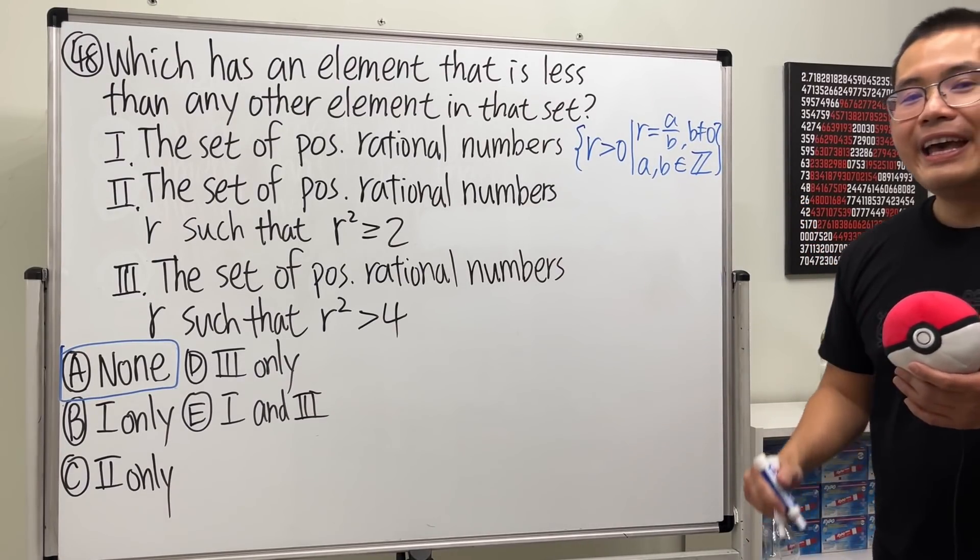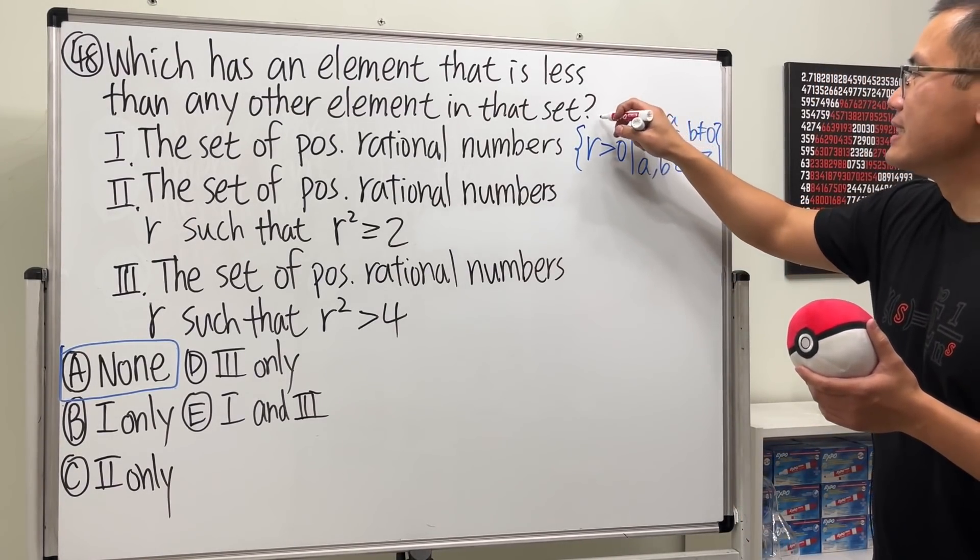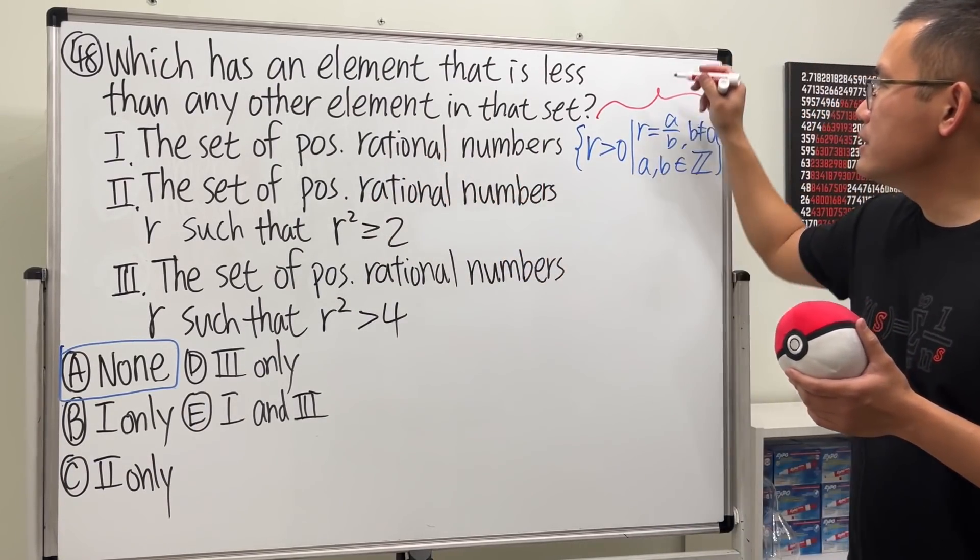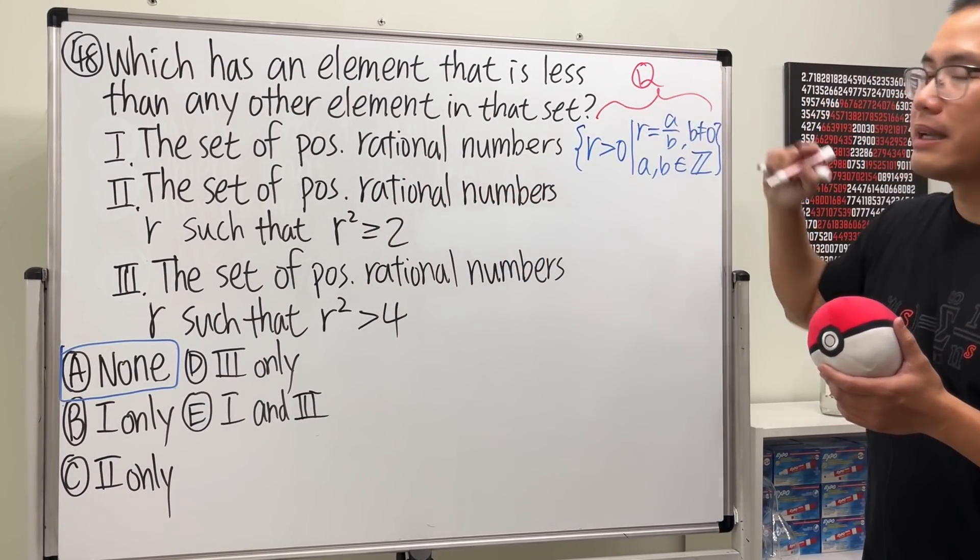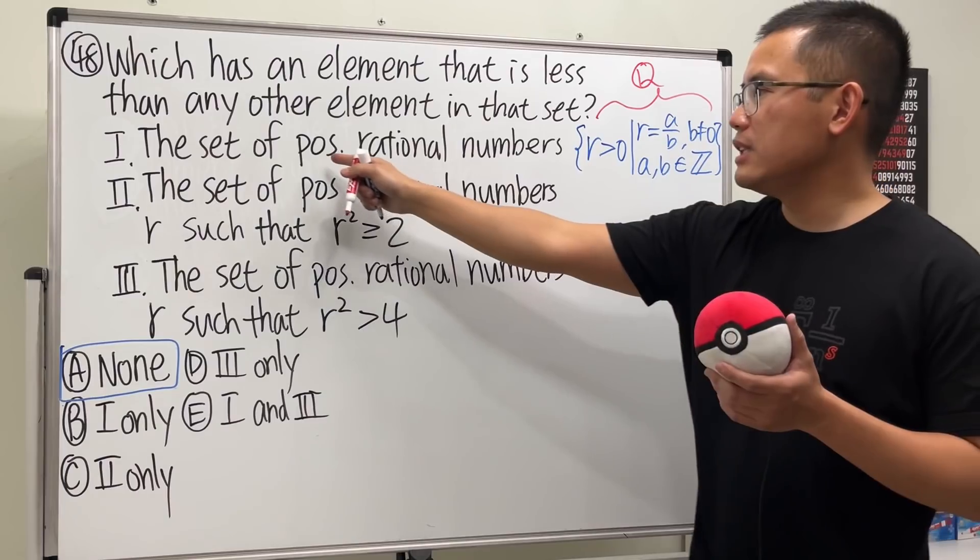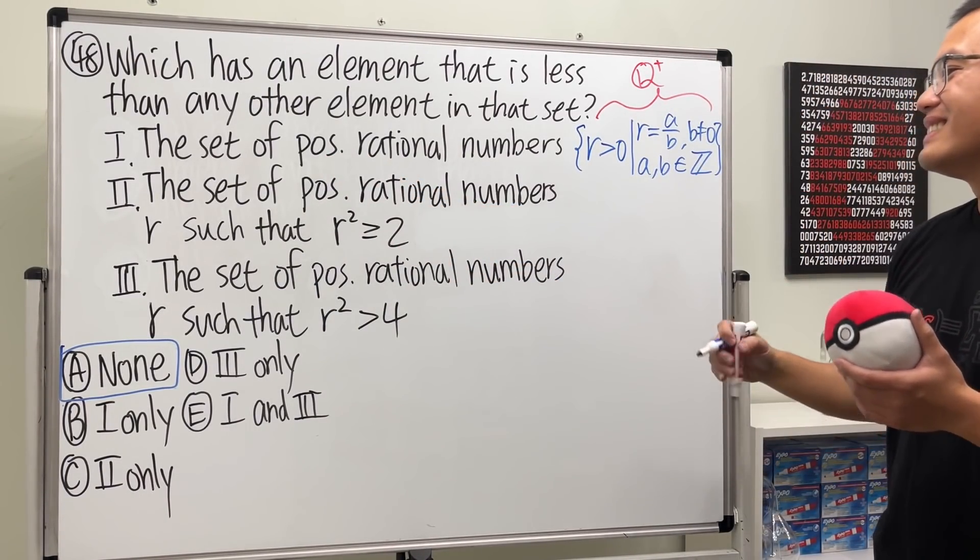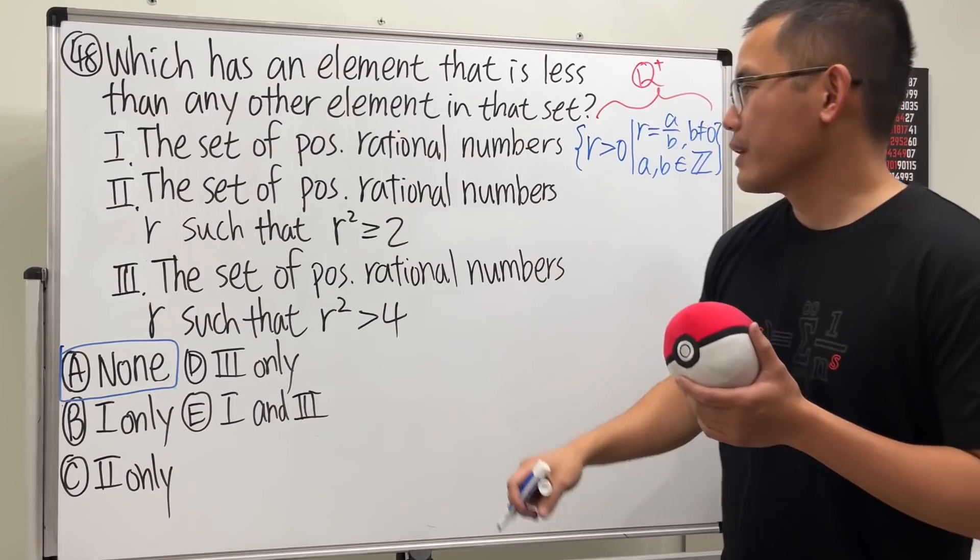In fact, this set has a special notation. The set of all the rational numbers is just Q, denoted by this. And if you want just the positive rational numbers, you can put on Q with a plus like so.